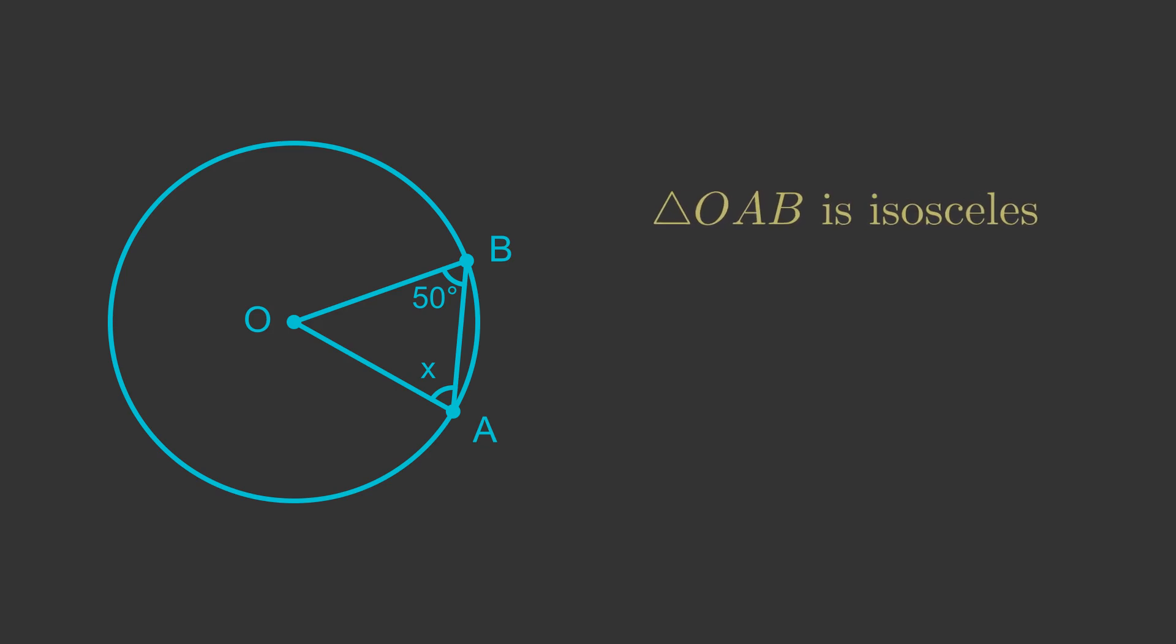We will use the fact that OAB is an isosceles triangle. This means that the angle B is equal to the angle A. We know the angle B is 50 degrees. So X, the angle A, must also be 50 degrees.